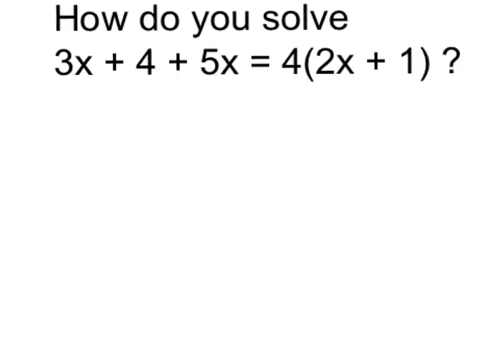If we're going to solve an equation like this, we need to get all of our x's in one place. On the left side of the equation, we have some like terms here. The 3x and the 5x combine to make 8x. So this simplifies to 8x plus 4.